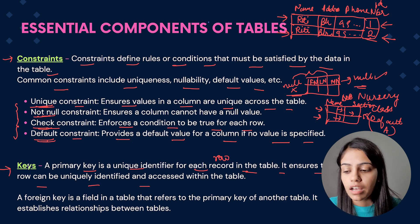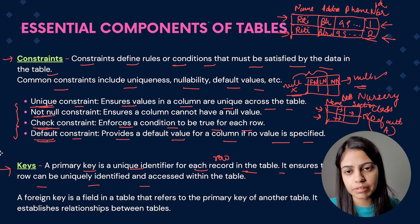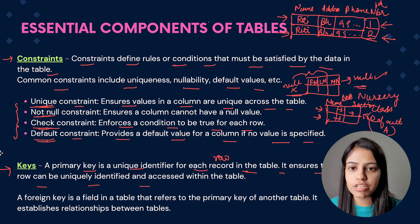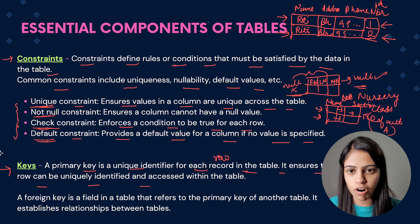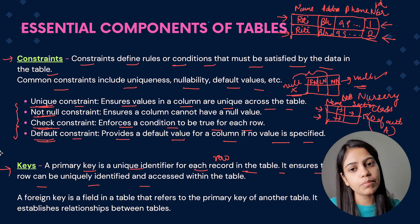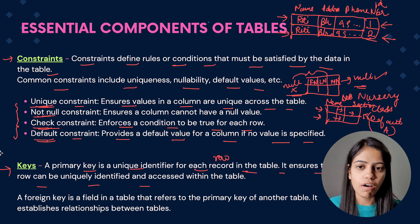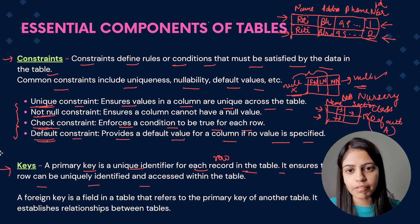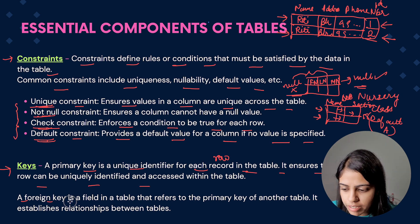Again, there are two keys — primary key and foreign key. I'm not discussing in much depth about these keys right now; I'm just discussing these terms because they will be used more and more from now. You should have a proper idea: if I say 'record', you should understand it means a row; if I say 'tuple', you should understand it is a row; if I say 'attribute', you should know it means column.